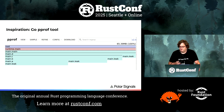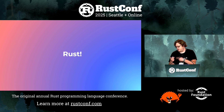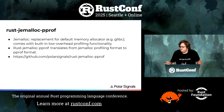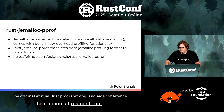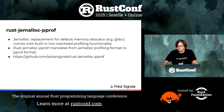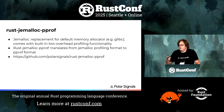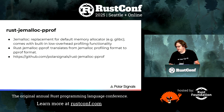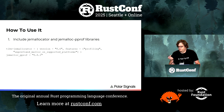So we wanted to replicate that in Rust. We have the Rust jemalloc PPROF library. You have to use jemalloc as a replacement for the default memory allocator, and then you can use its built-in profiling functionality. We have this Rust jemalloc PPROF library which translates from the jemalloc profiling format to the PPROF format, which lets you use it in a similar way to the Go PPROF library.